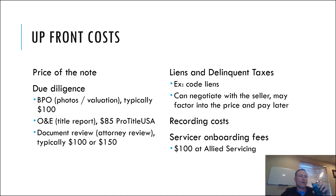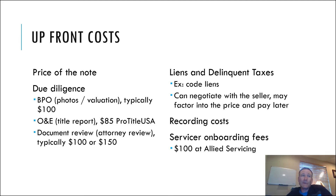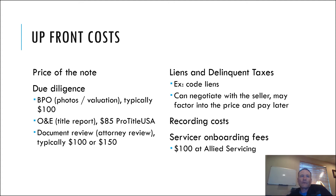When we look at upfront costs when you buy the note, your expenses are more than just the price you pay. A lot of this is going to be due diligence. You're probably pulling a BPO, which typically costs around $100. You're hopefully pulling an O&E report — an ownership and encumbrances report — which is basically a form of a title report. I get those from Pro Title USA for $85, usually around $100 depending on where you go. You're hopefully having an attorney review the docs as well, generally $100 to $150, sometimes more depending on the attorney and the state.